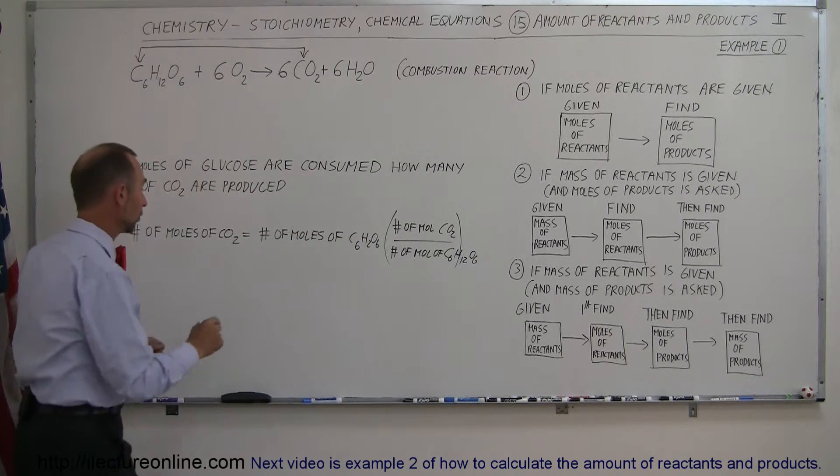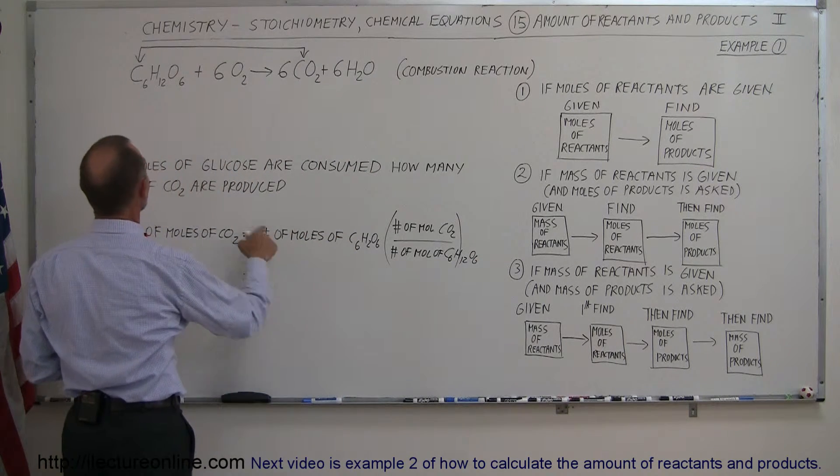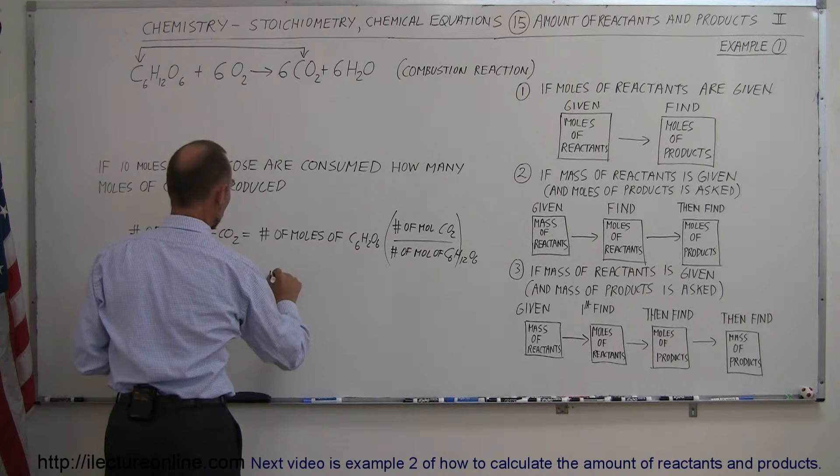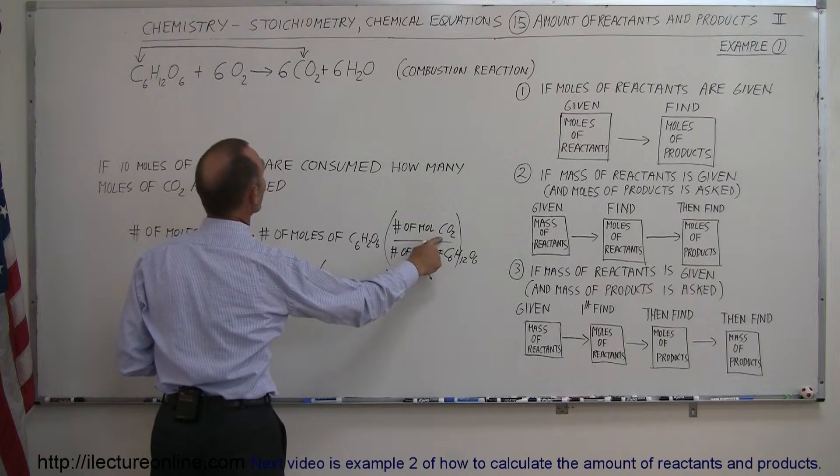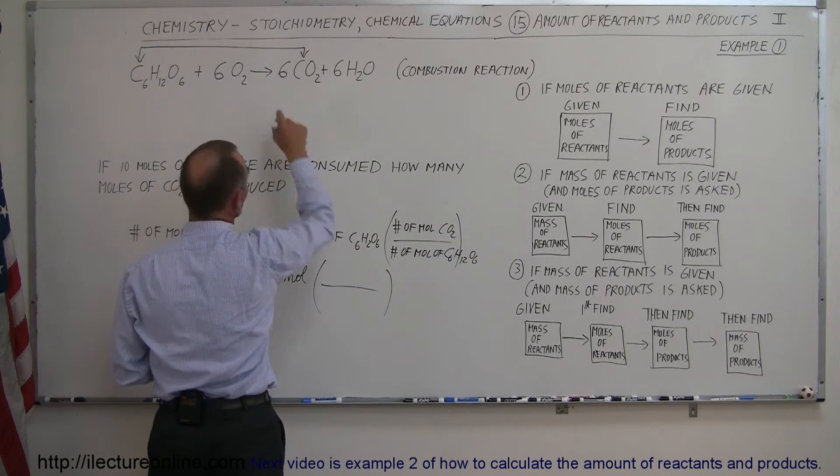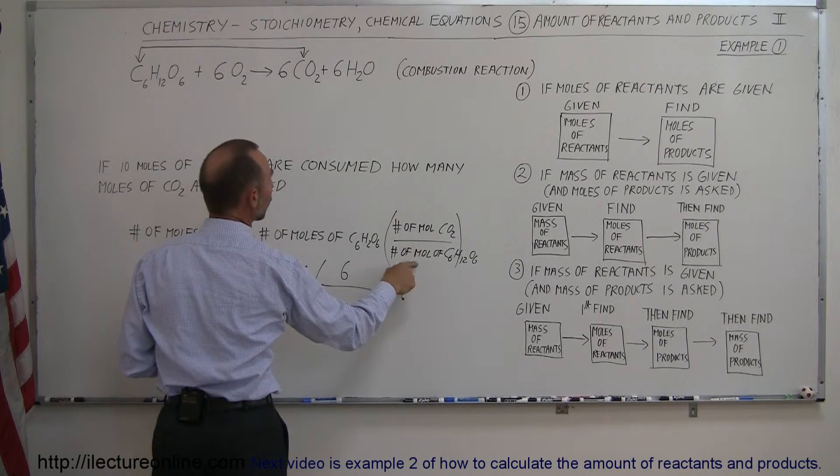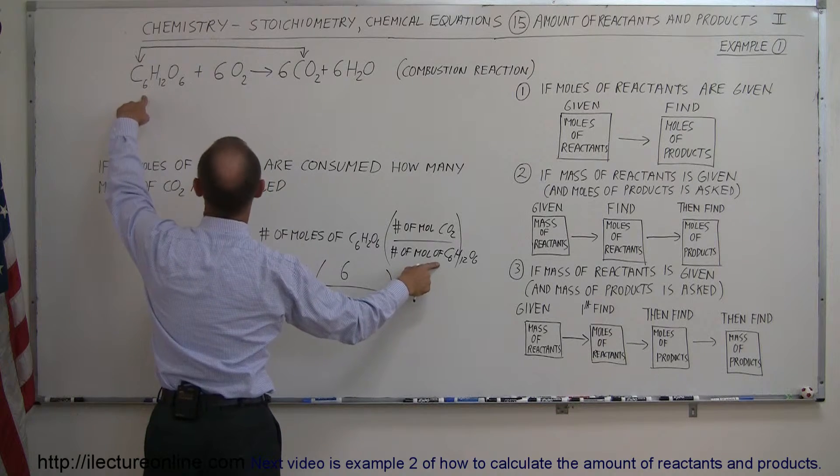Alright, so let's plug in those numbers. We were given that we had 10 moles of glucose. So 10 moles of glucose. And then we multiply that times the ratio of the number of moles of carbon dioxide in our equation, which is 6, divided by the number of moles of glucose, which is 1.